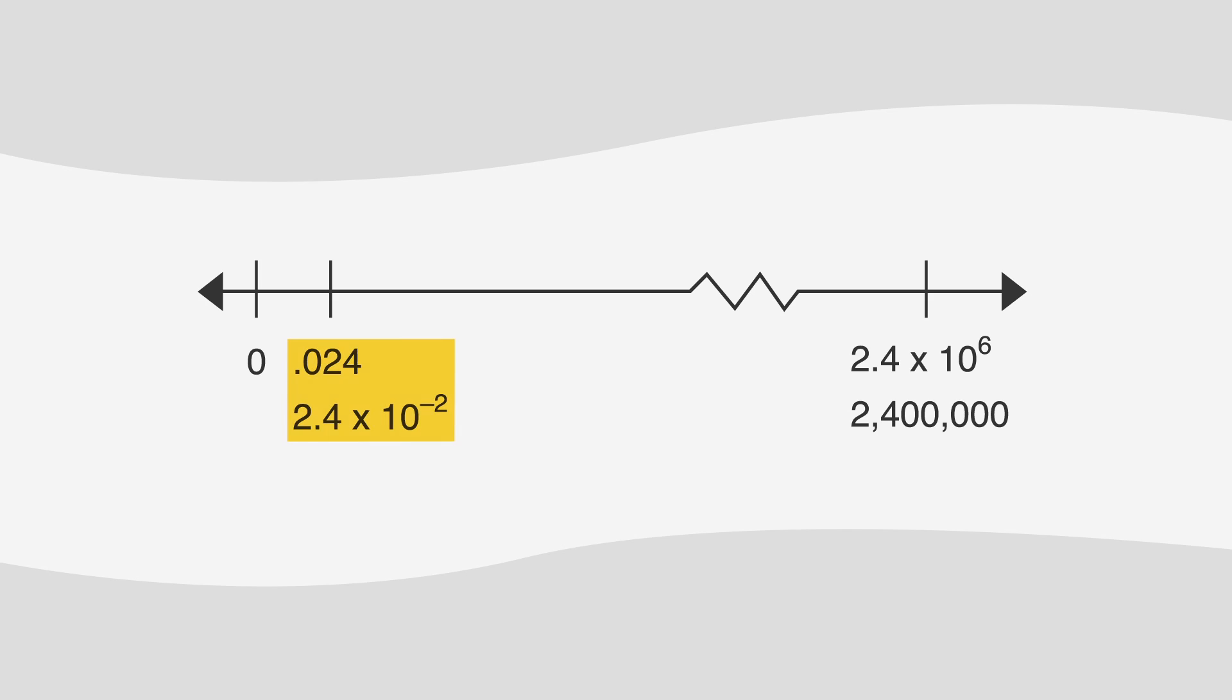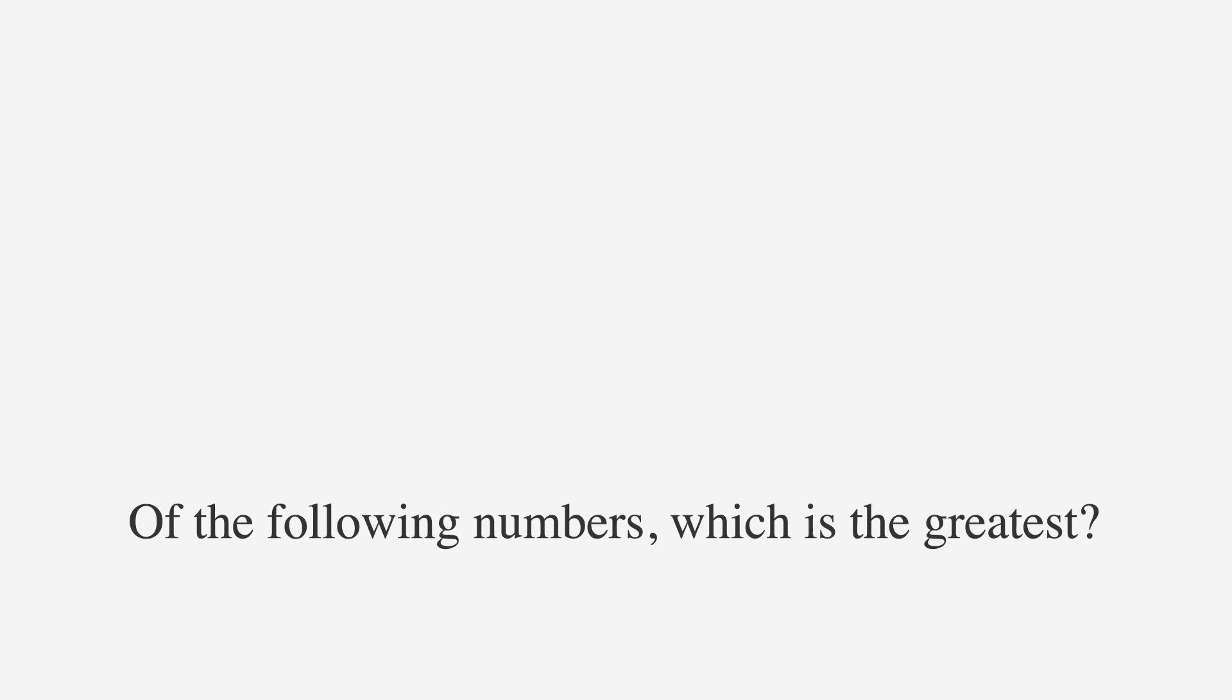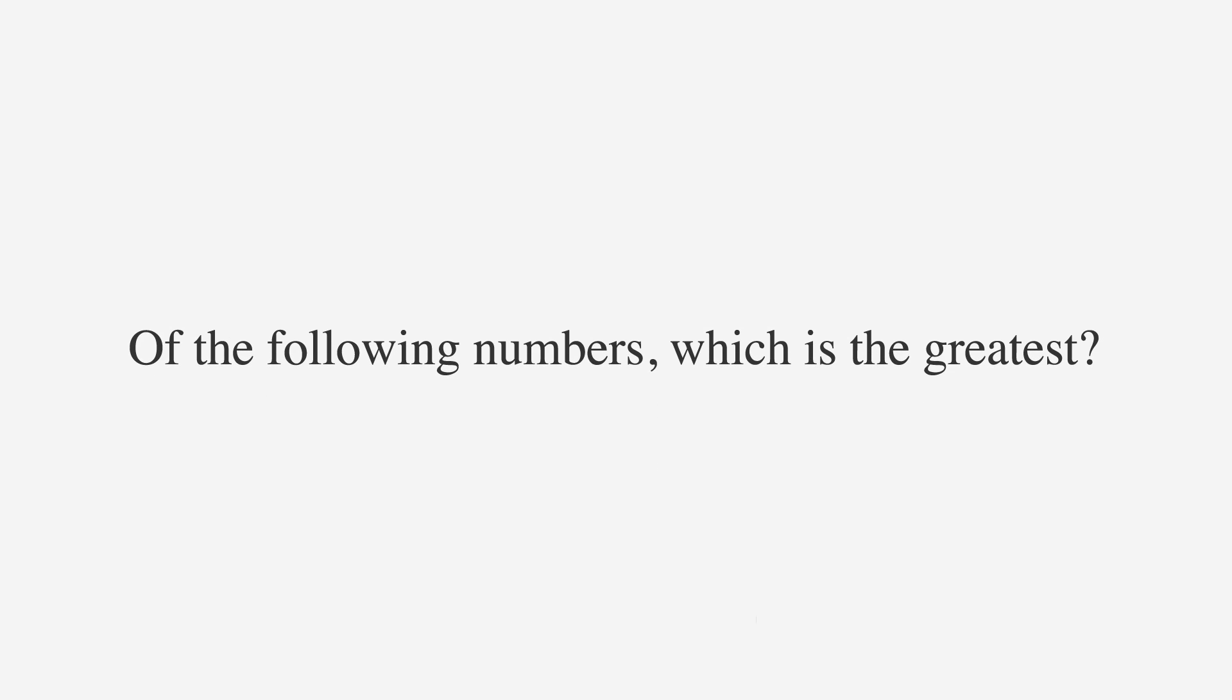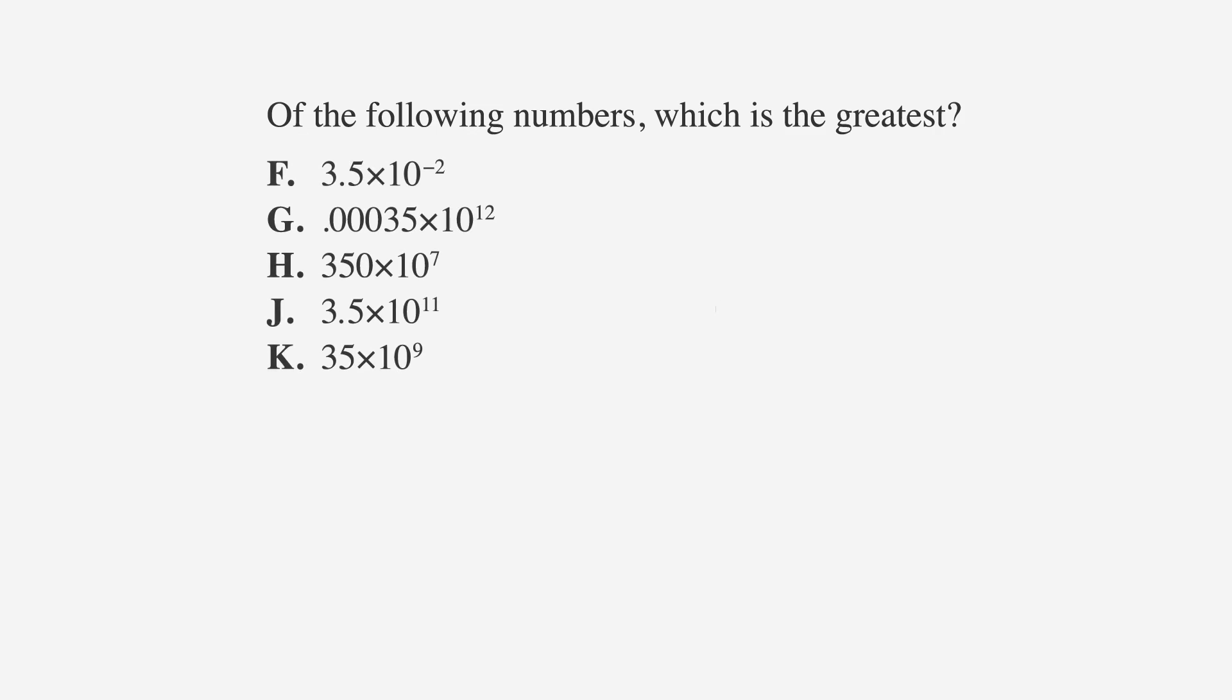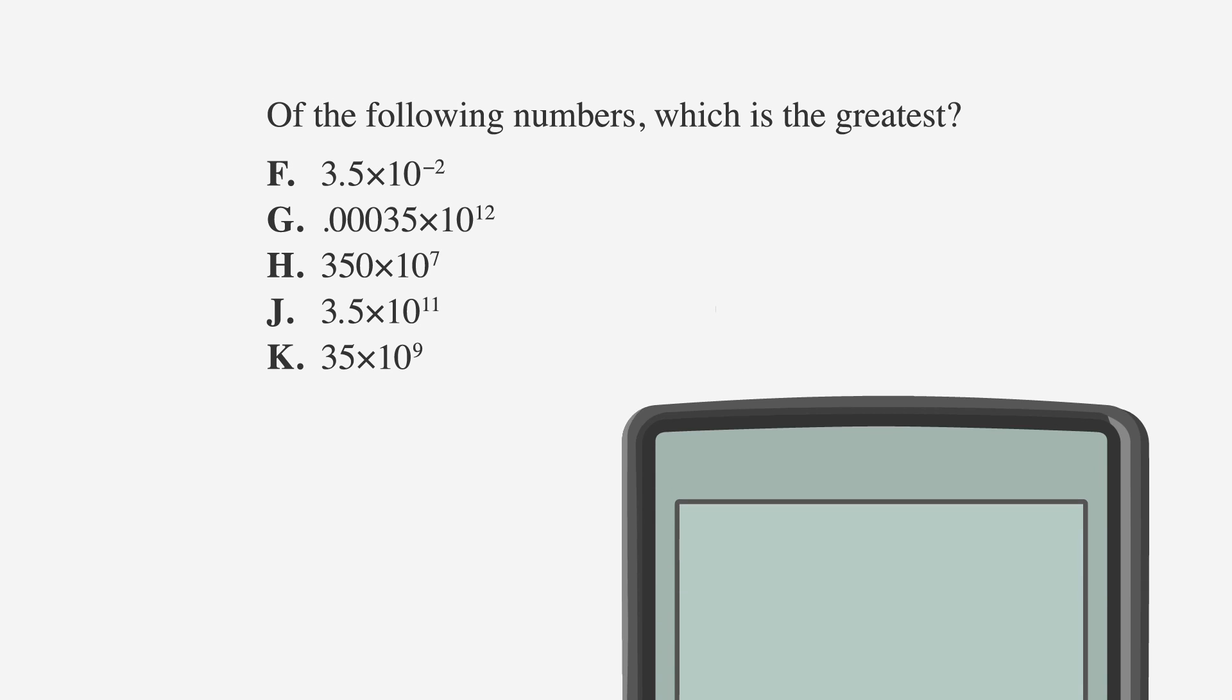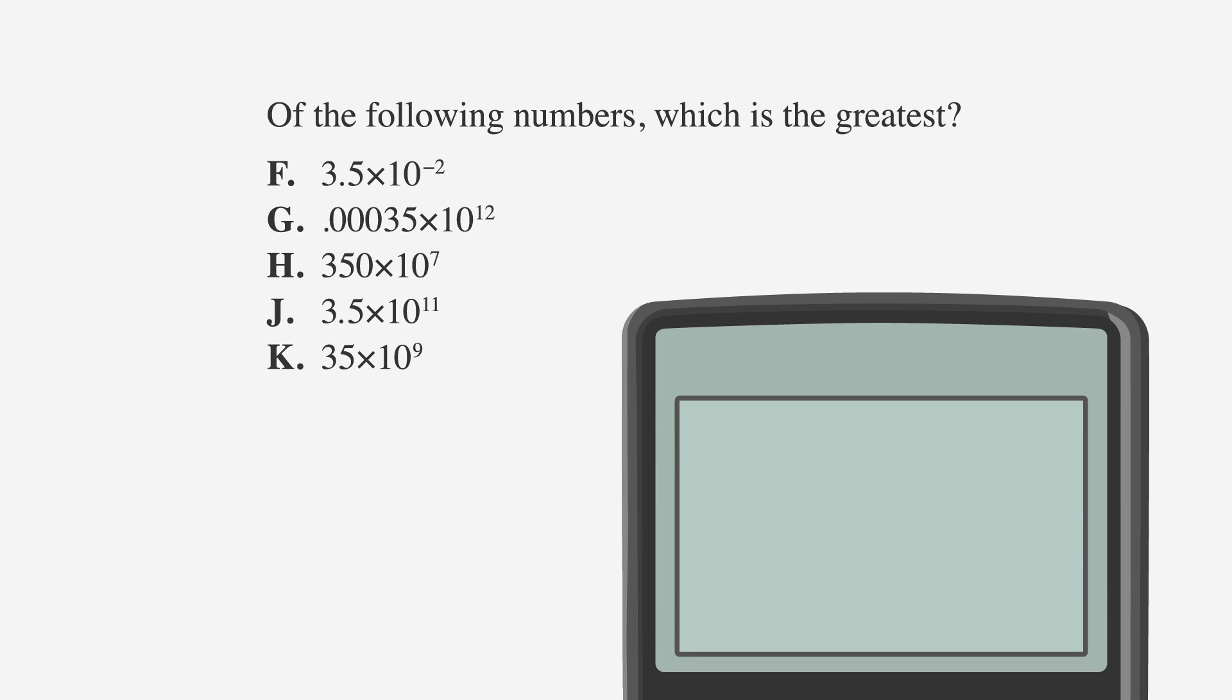The last calculator skill we'll talk about is how to tackle scientific notation problems. Scientific notation is a convenient way to handle very big or very small numbers. Very small positive numbers are represented using scientific notation with negative exponents, and large numbers are represented using scientific notation with positive exponents. Let's look at an ACT question involving scientific notation. Of the following numbers, which is the greatest?